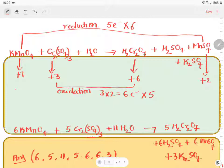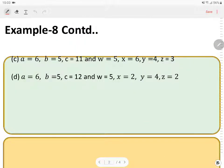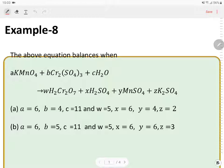So, let us come back to the question and see what's the answer. 6, 5, 11, 5, 6, 6 and 3. Therefore, the answer is B. So, thank you.